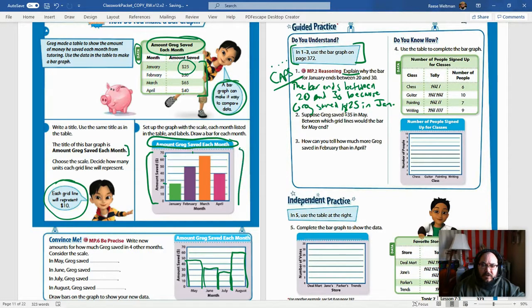So that's what you're going to write here. You're going to say something similar to this: the bar ends between 20 and 30 because Greg saved $25 in January. Again, excuse my bad handwriting, it's even worse here when I'm writing on this tablet, so I apologize for that. The bar ends between 20 and 30 because Greg saved $25 in January. Now suppose Greg saved $35 in May. Between which grid lines would the bar for May end?